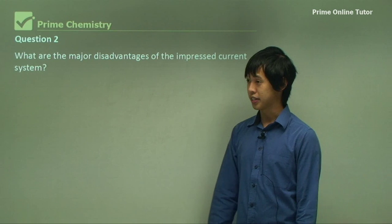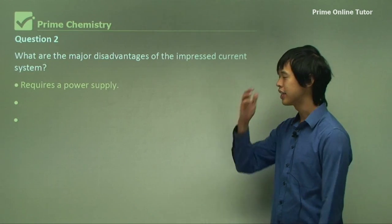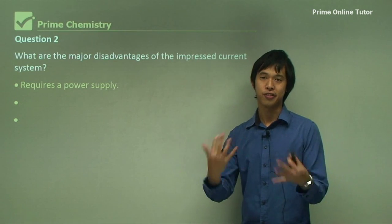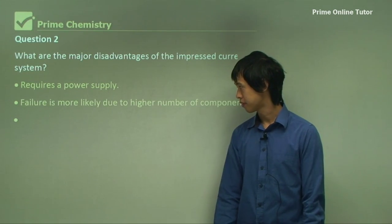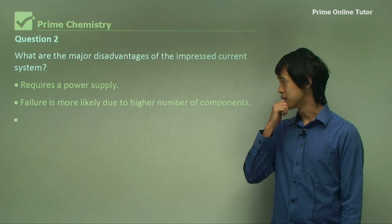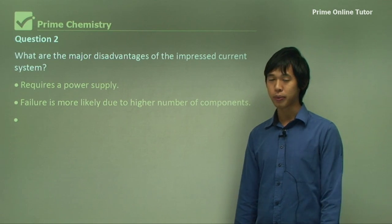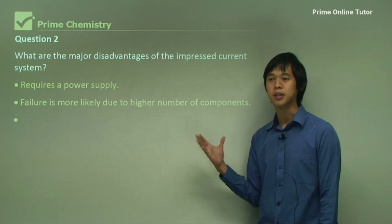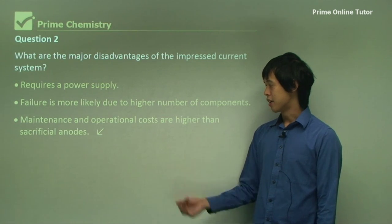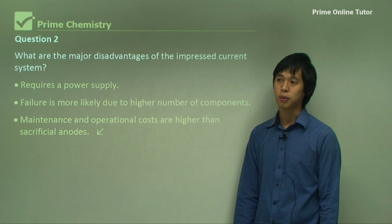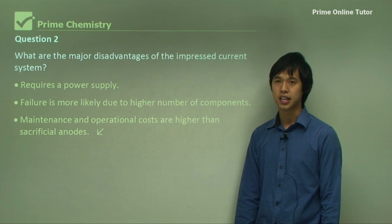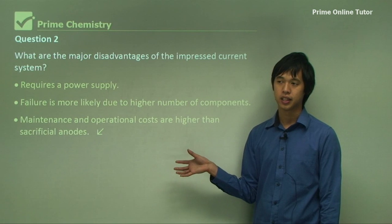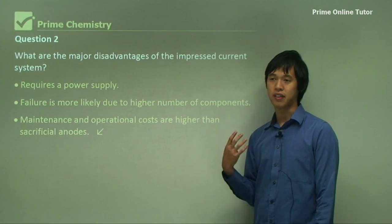What are the major disadvantages of the impressed current system? First, we need a power supply — some form of infrastructure is required to power the device. Second, failure is more likely due to the high number of components compared to a sacrificial anode system. Third, maintenance and operational costs are higher than sacrificial anodes in the short term, though in the long term you may save money by not having to purchase large quantities of zinc or magnesium.